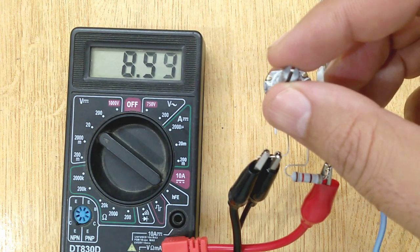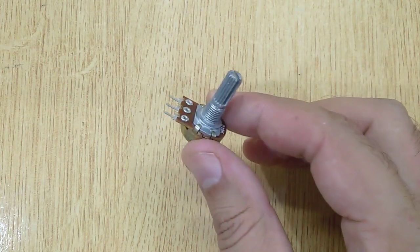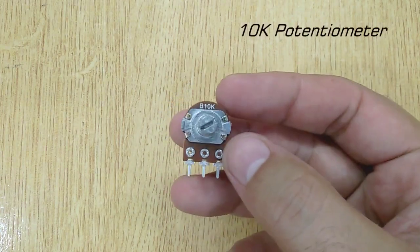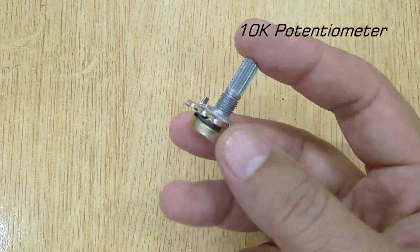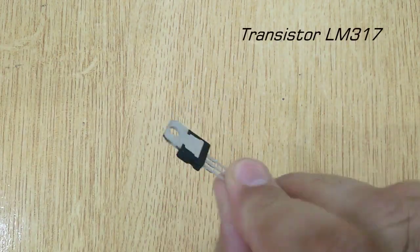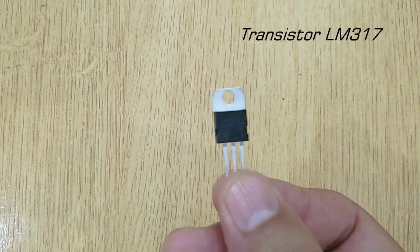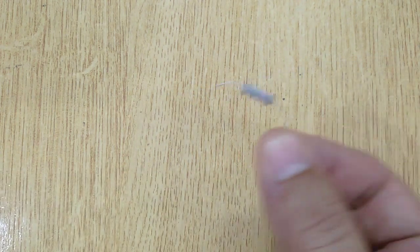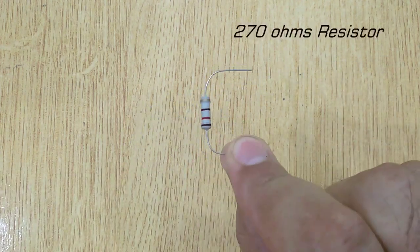To complete this circuit you will need a 10K potentiometer, Transistor LM317, and a 270 ohm resistor.